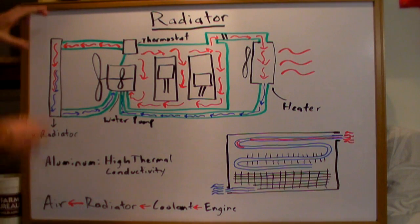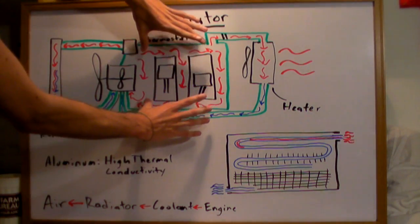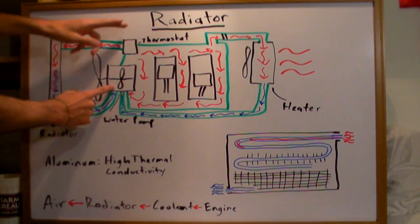So here's how it's set up. You've got your radiator here in the front of the car. Now the coolant is going to be running through. Here's your engine, here's a water pump, and here's a thermostat.